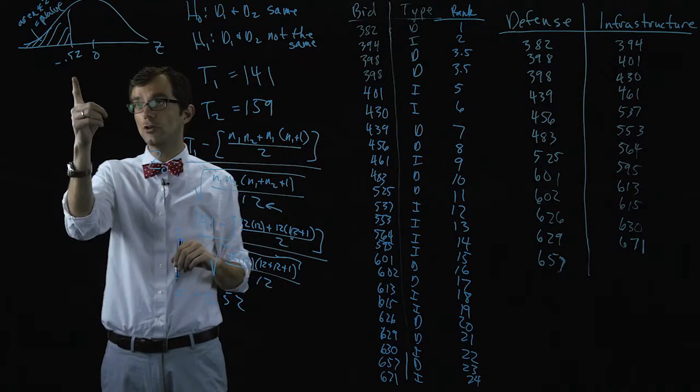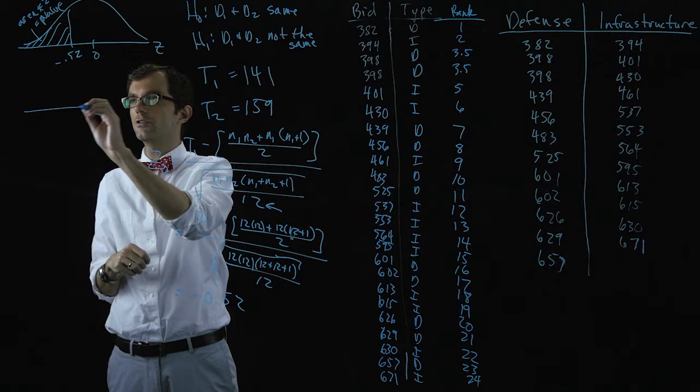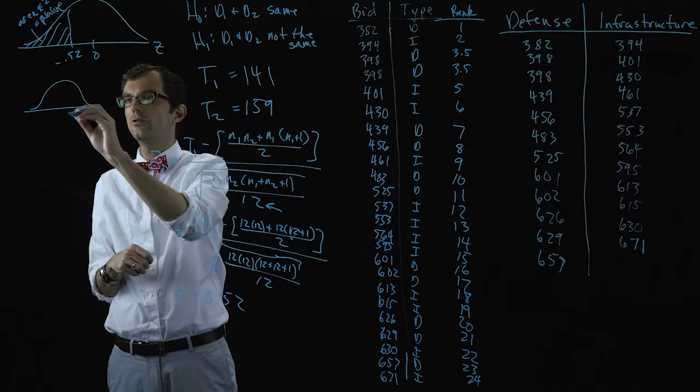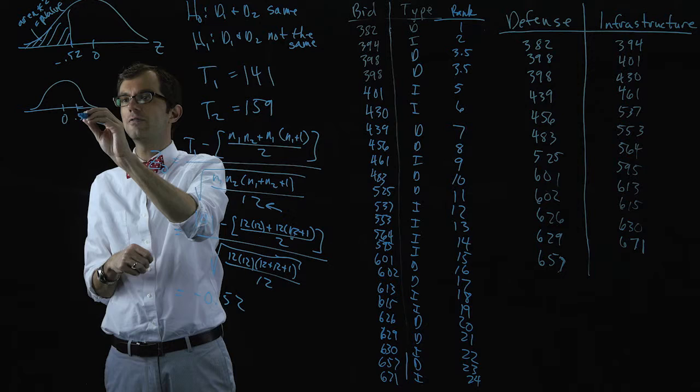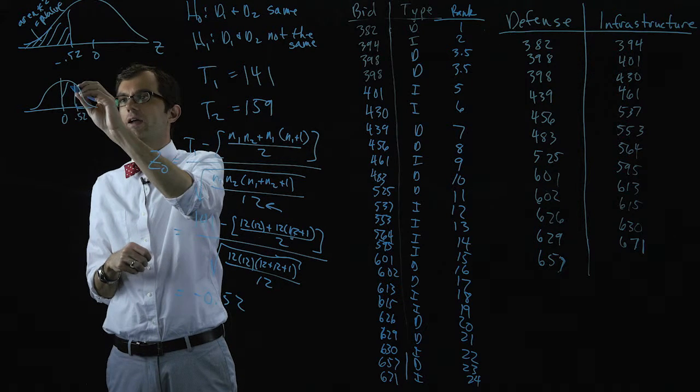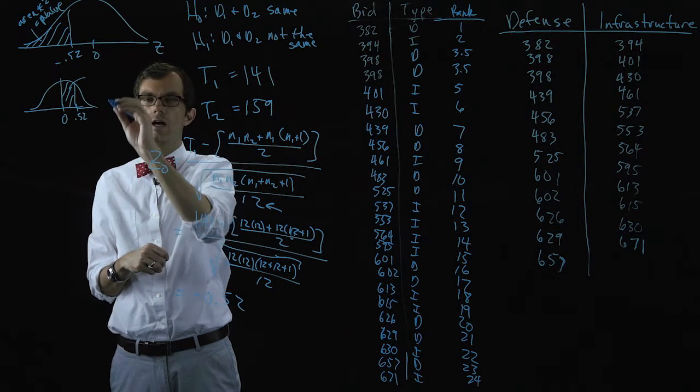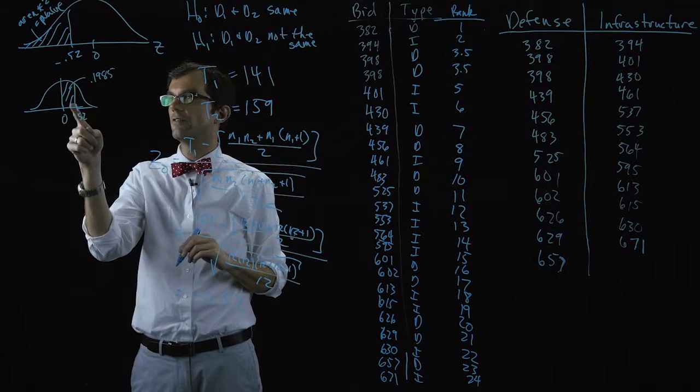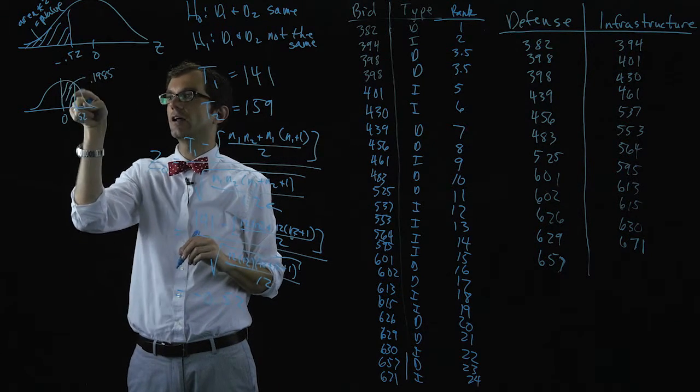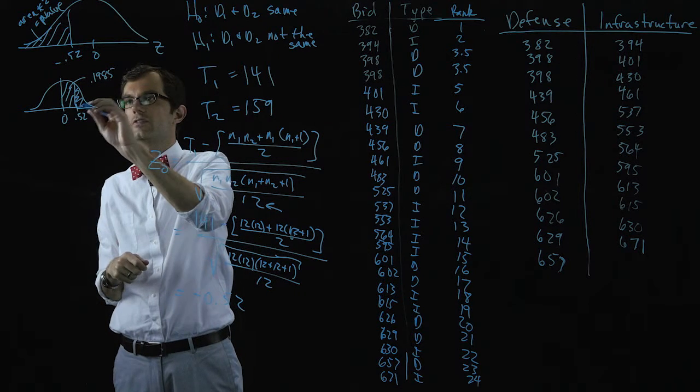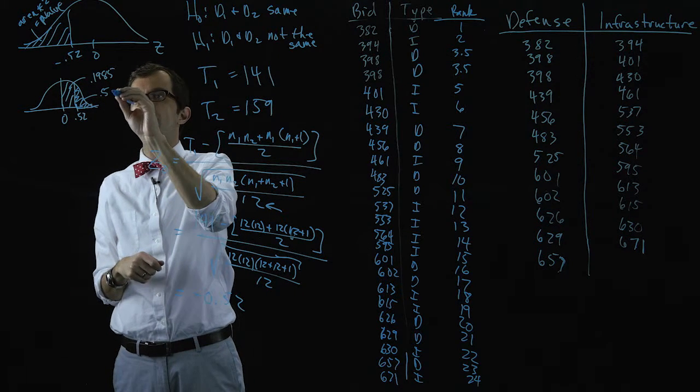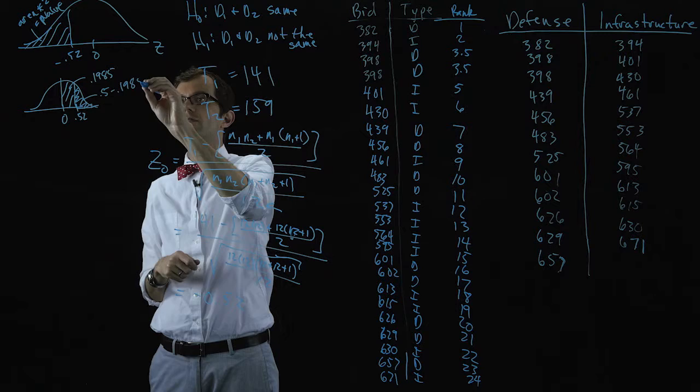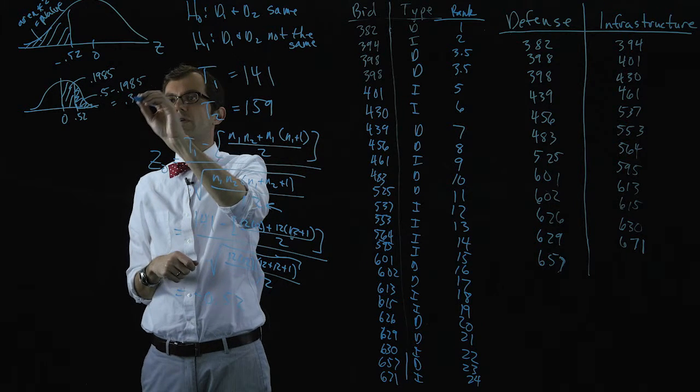So we can go look this up in our z-table. If we do that between zero and point five two we find the area point one nine eight five. Point one nine eight five for this area. We don't want that area, we want the tail area. So that's point five minus point one nine eight five. That is point three zero one five.